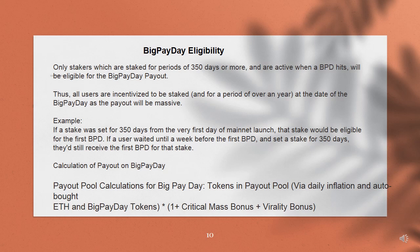Big payday eligibility: only stakers who are staked for periods of 350 days or more and are active when a big payday hits will be eligible for the big payday payout. All users are incentivized to be staked for a period of over a year at the date of their big payday, as the payout will be massive. For example, if a stake was set for 350 days from the very first day of mainnet launch, that stake would be eligible for the first big payday. Even if a user waited until a week before the first big payday and set a stake for 350 days, they'd still receive the first big payday for that stake.